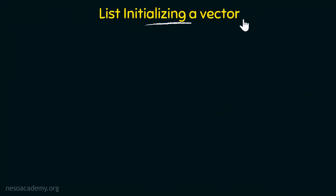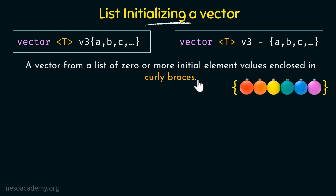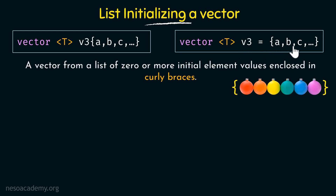Next we have list initializing a vector. Here we create a vector from a list of zero or more initial element values enclosed in curly braces. We specify vector, then the type within angle brackets, then the name of the vector, and within curly braces we specify the elements. Curly braces are very important — we must use them when list initializing a vector. Using a different bracket would change the meaning and give unexpected results or throw an error.